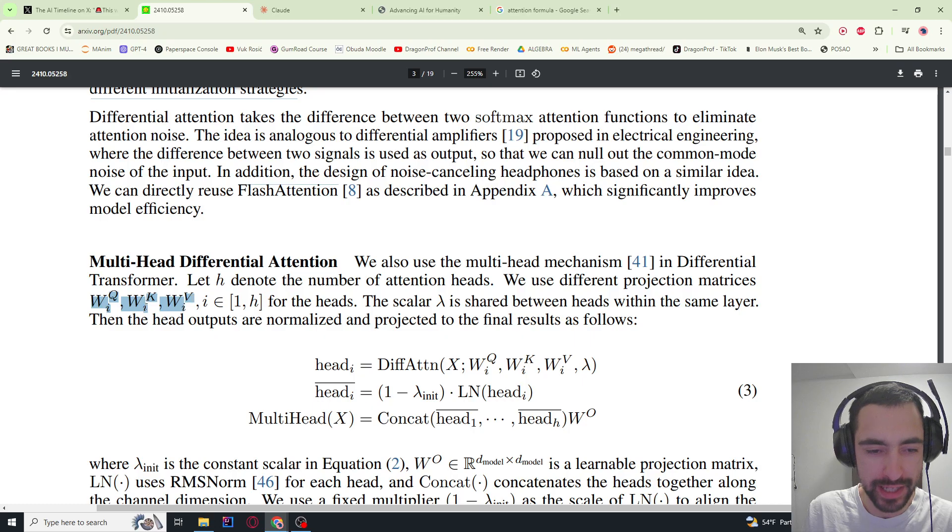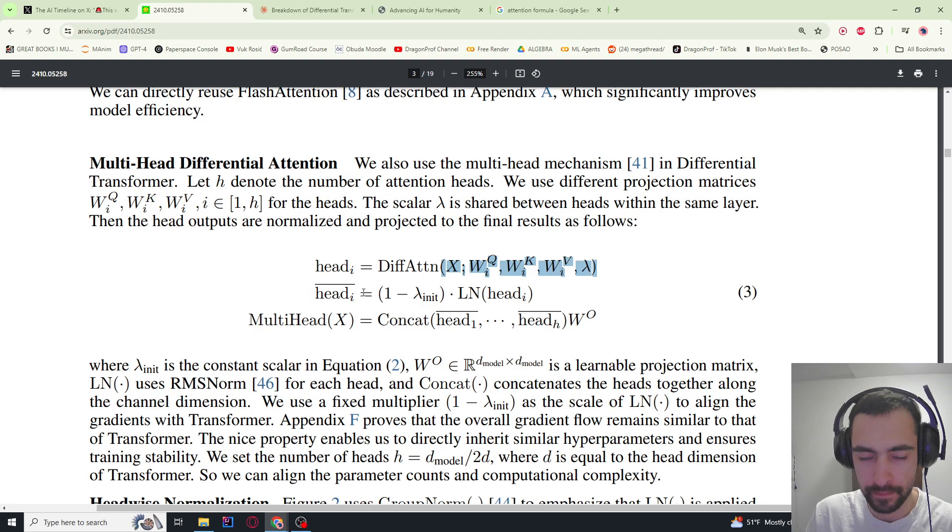They also implement multi-head differential attention. Basically, they have these matrices for projecting input onto queries—creating queries from input, creating keys from input, creating values from input. They say i belongs to from one to number of heads. The scalar lambda is shared between heads in the same layer. For each head, we calculate differential attention by passing in these values. This is layer normalization—we pass in the head, they use RMS norm, then multiply with this constant. It scales the normalization as required to align the gradients with the original transformers so they can inherit similar hyperparameters and stabilize the training. In the end, they concatenate all of the heads, multiply it with some learnable parameter, and that's how you get multi-head attention.